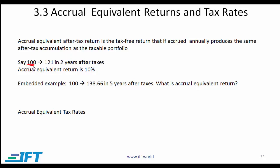Let's say you invest 100 and this number goes from 100 to 130, but you pay taxes equal to 9. What are you left with after taxes? 121. All this happens over 2 years. Isn't this exactly the same as investing in a tax-free environment at 10%?